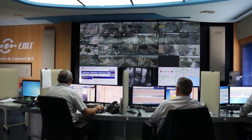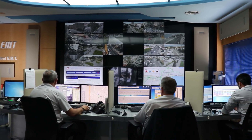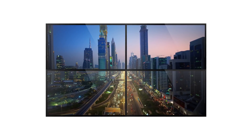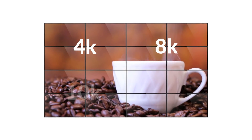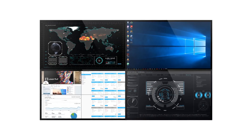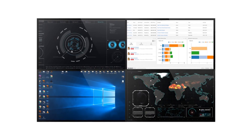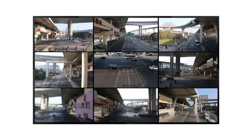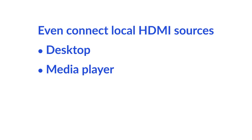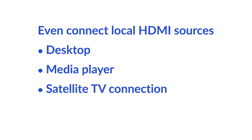You can deploy a very broad variety of content onto your video wall. You can play video of any resolution — 4K, 8K, 10K and beyond, there's no limit. Display browser-based content, pull up web pages, dashboards and other content delivered through a browser. Stream RTP and RTSP content, and even connect local HDMI sources such as a desktop or media player or satellite TV, even connections with HDCP encryption.